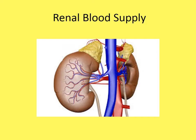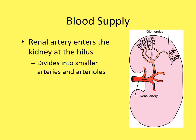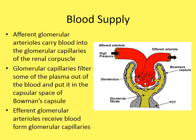The renal artery enters the kidney at the hilus and divides into smaller arterioles. A key distinction: afferent vessels carry blood to a structure, while efferent vessels carry blood away from it. A helpful memory trick — 'E is for exit, E is for efferent' — to remember that efferent means leaving a structure.